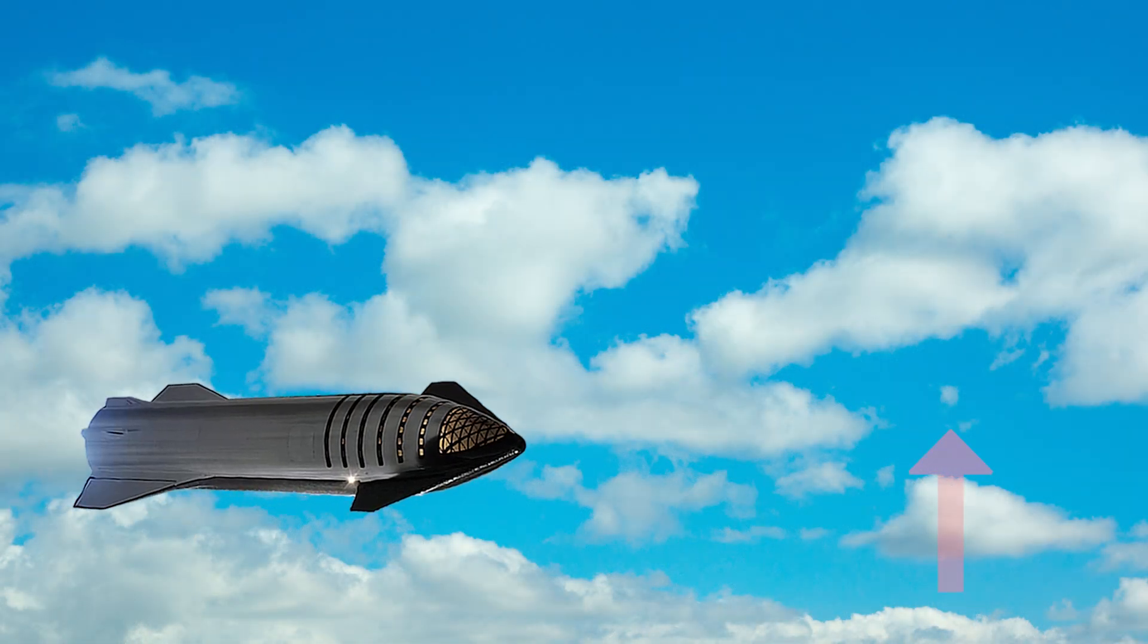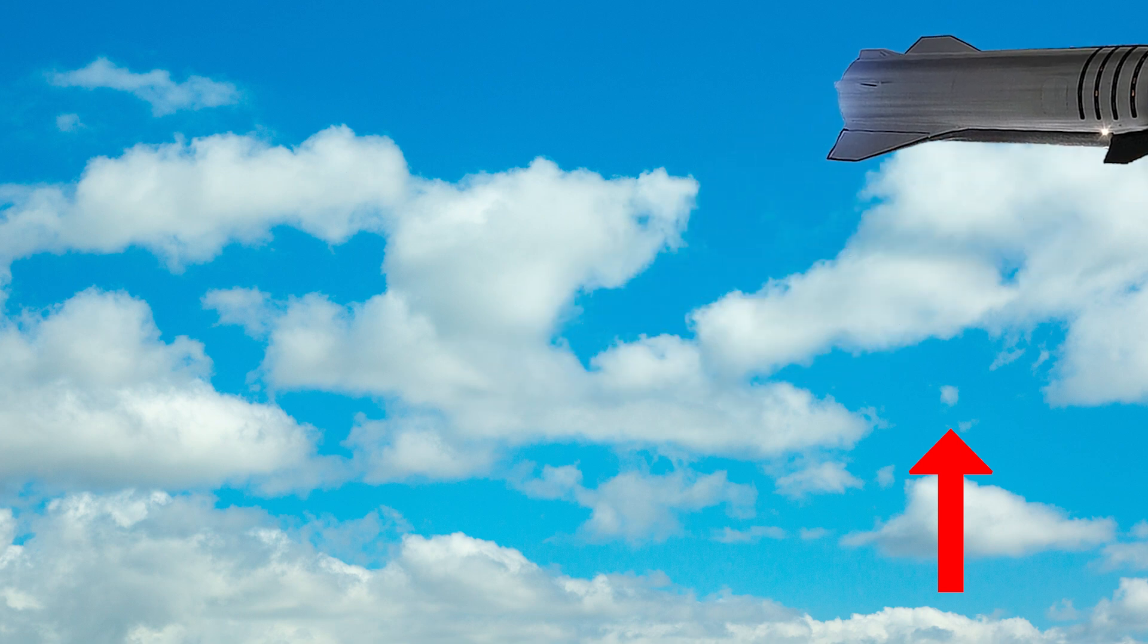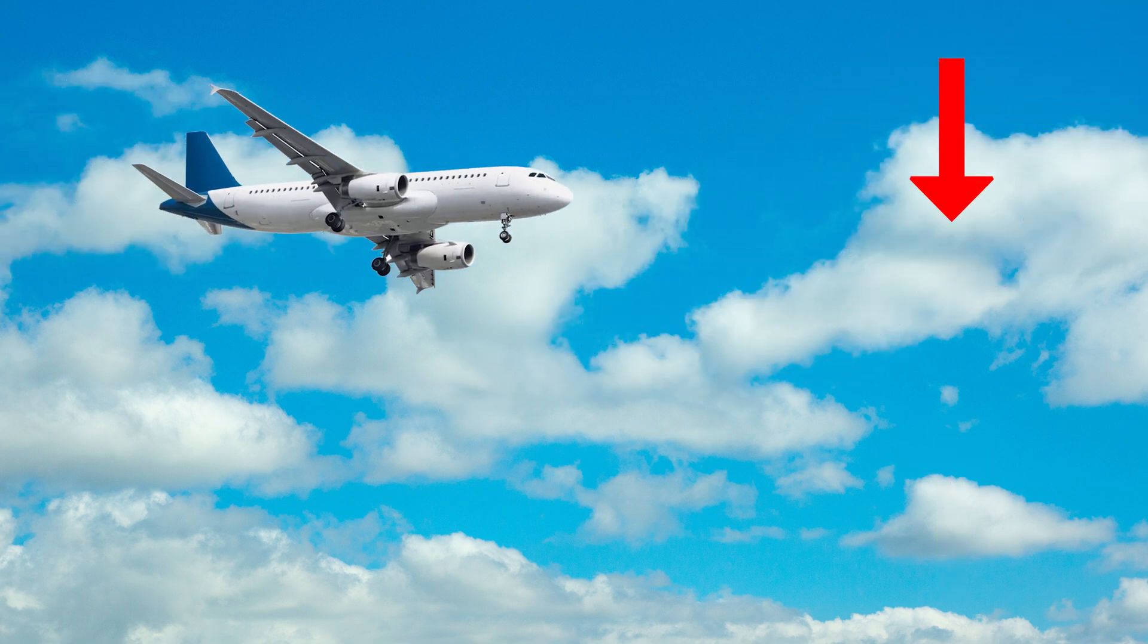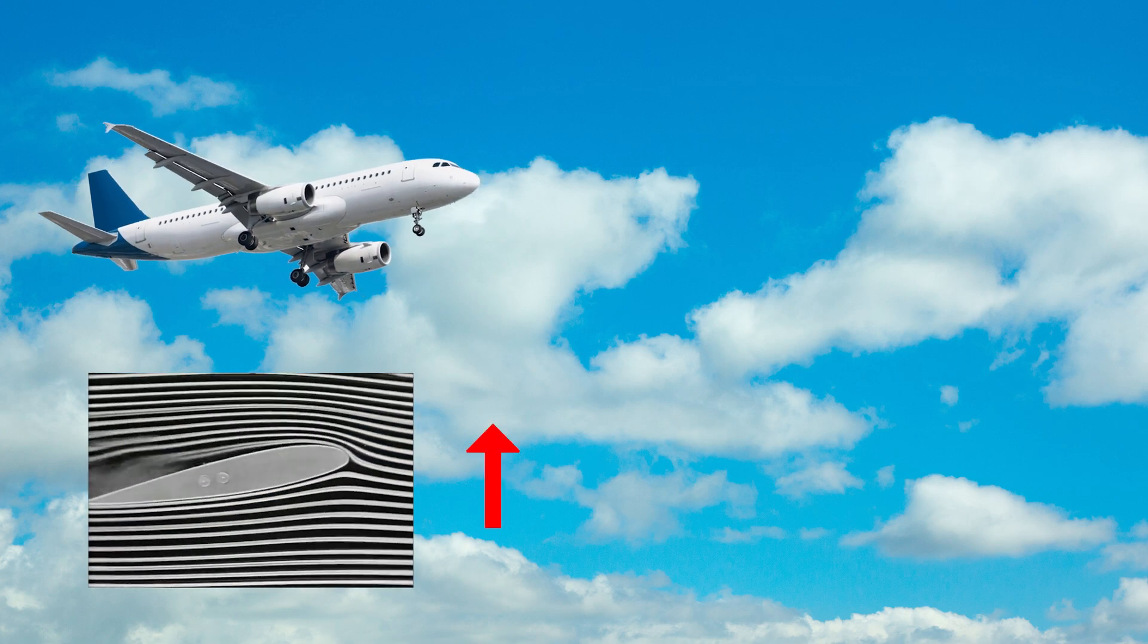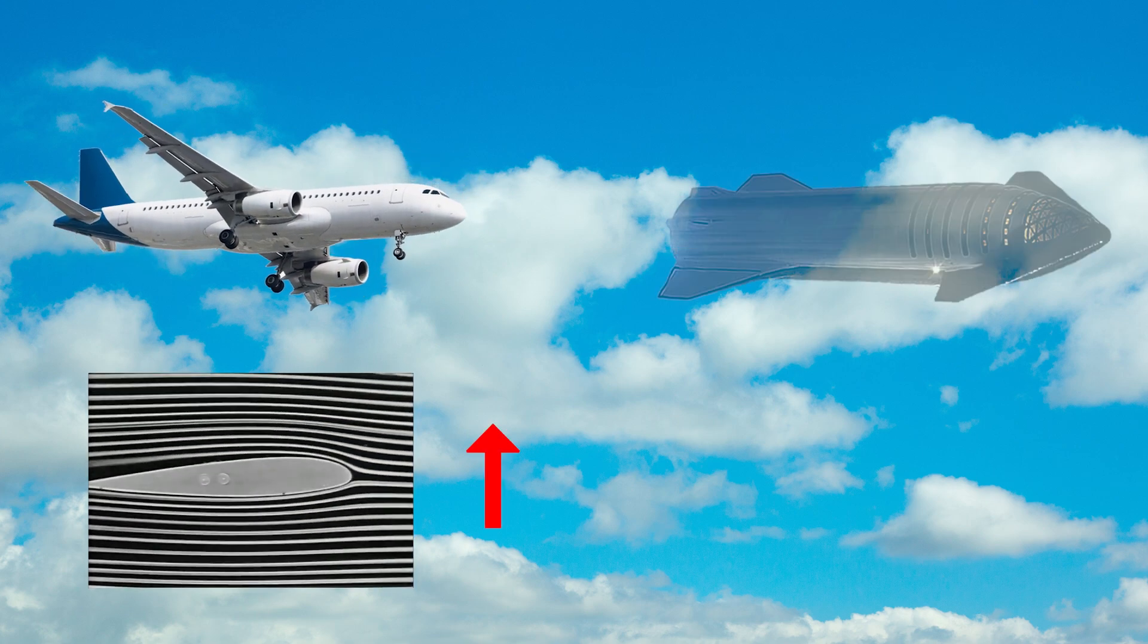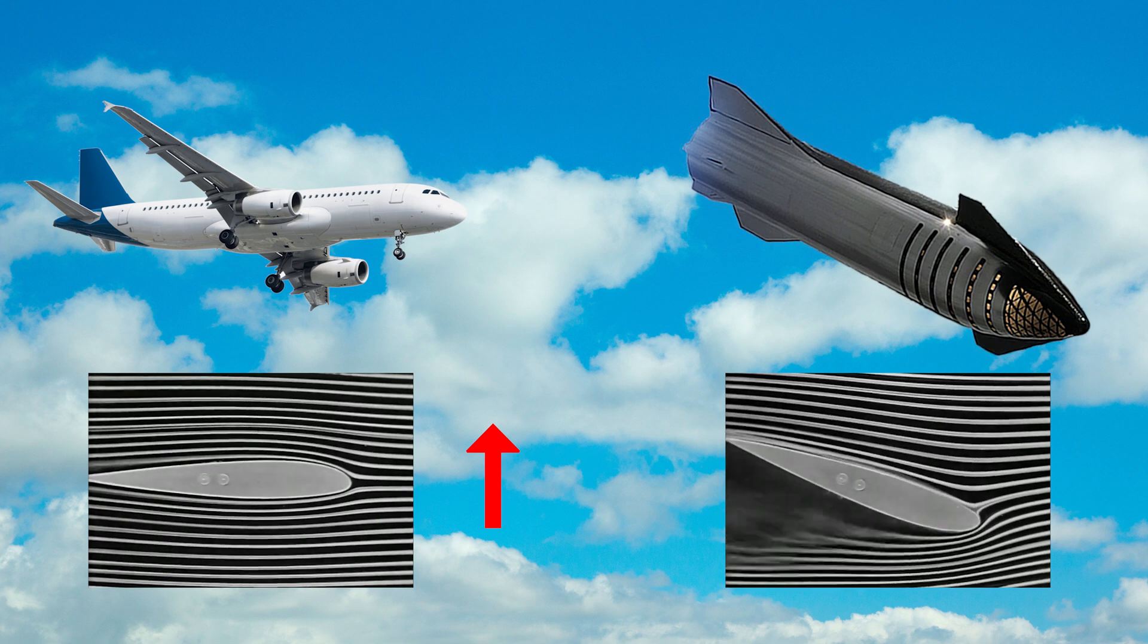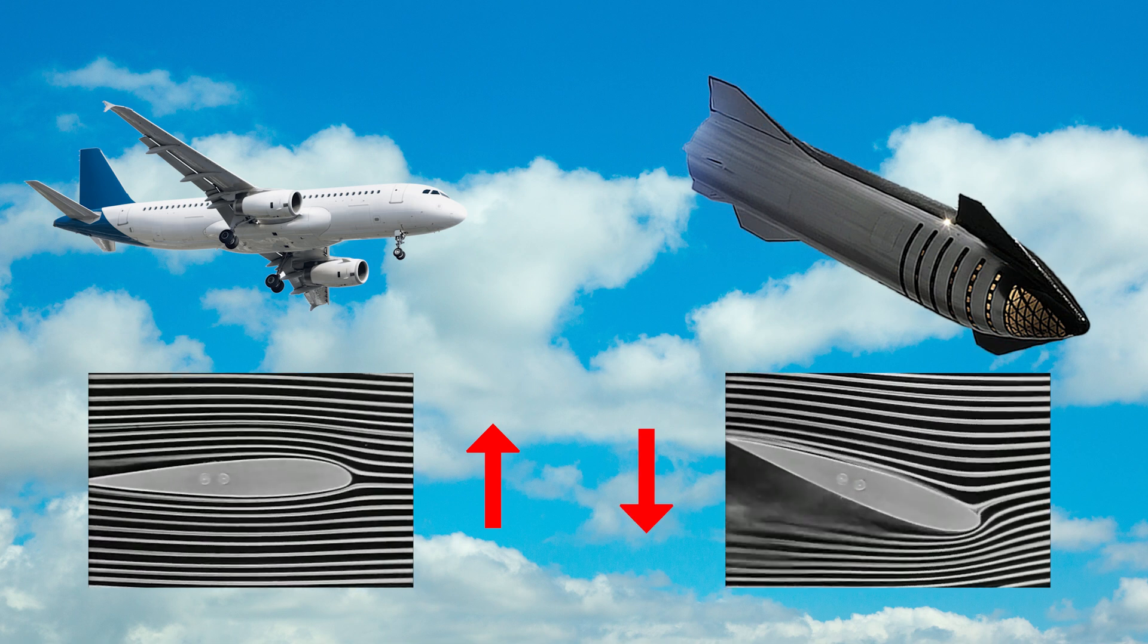It may seem strange that a lack of lift would cause Starship to gain altitude, when a lack of lift for an airplane would result in it losing altitude. The difference is, an airplane uses lift to offset the pull of gravity, whereas Starship plans to come in upside down, so that way the lift generated can supplement the pull of gravity.